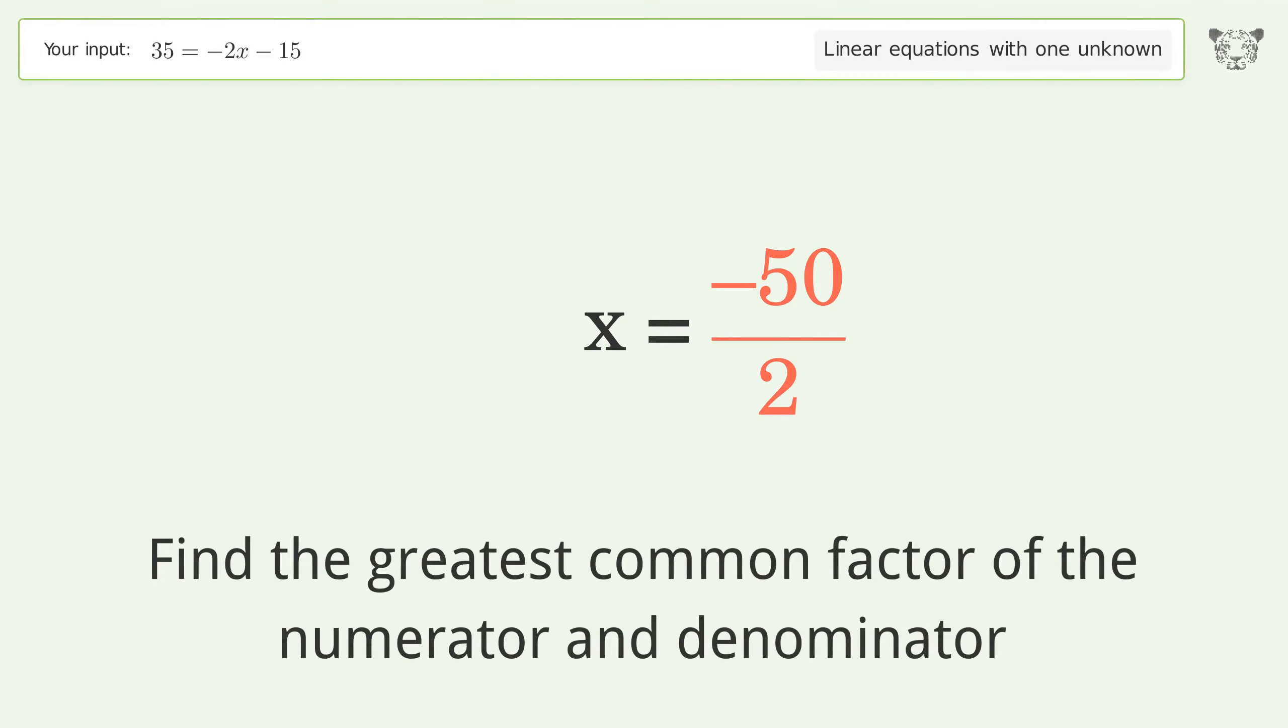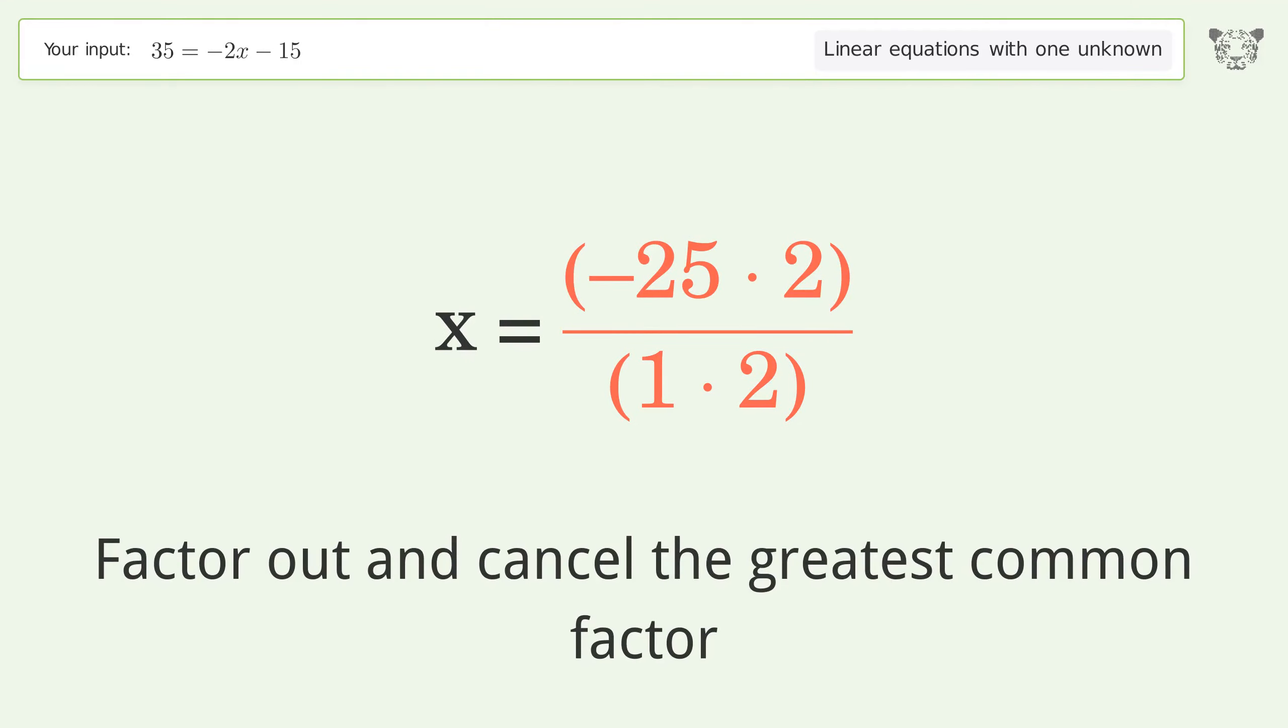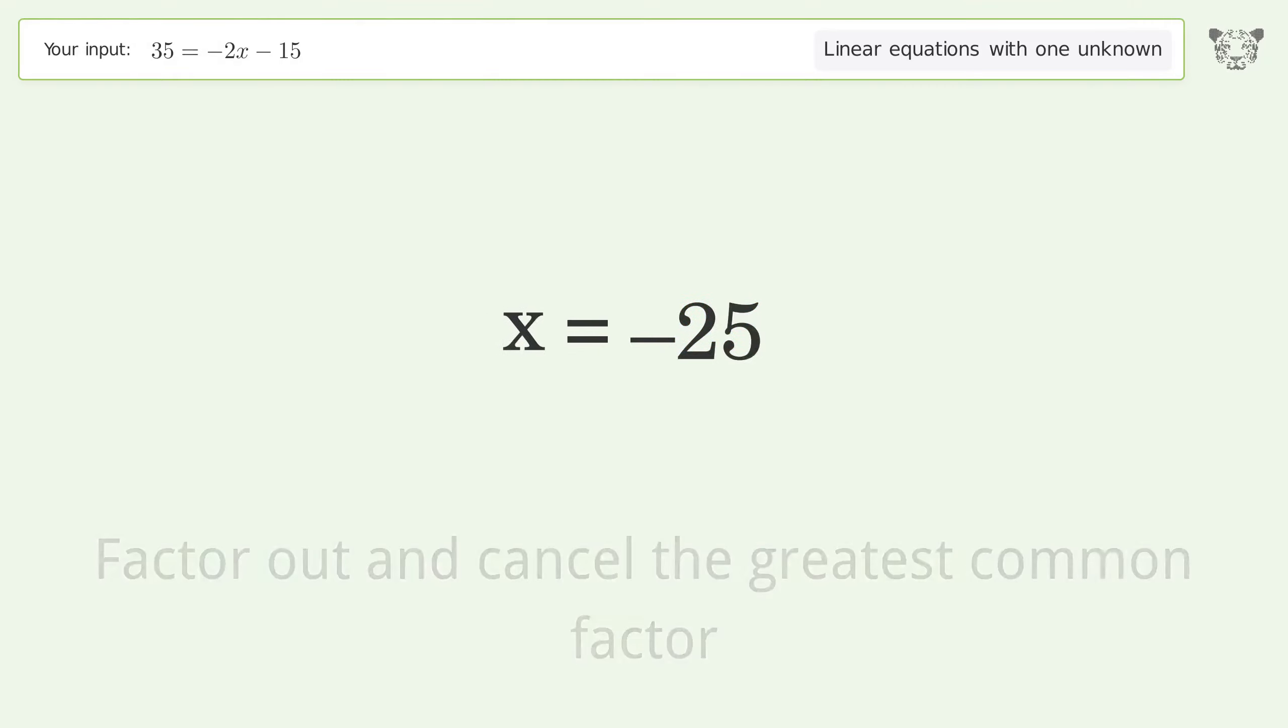Find the greatest common factor of the numerator and denominator. Factor out and cancel the greatest common factor. And so the final result is x equals negative 25.